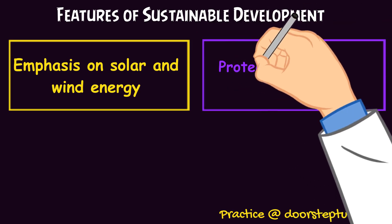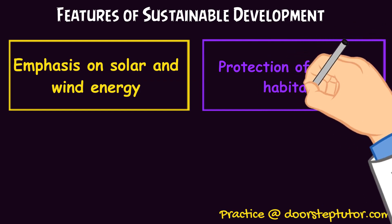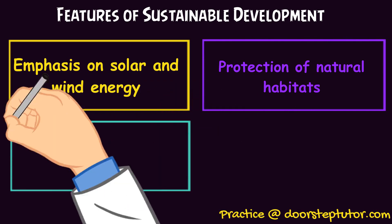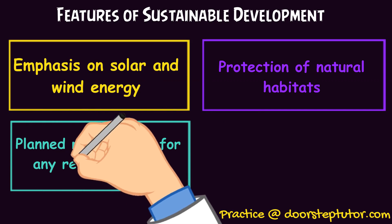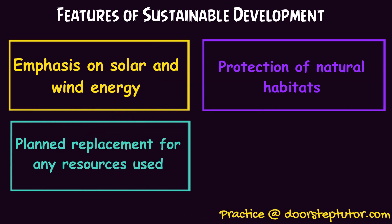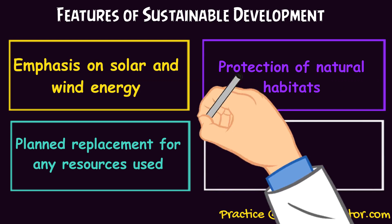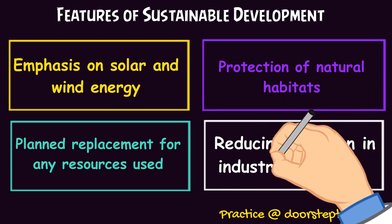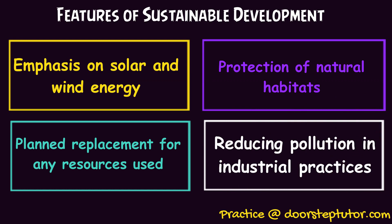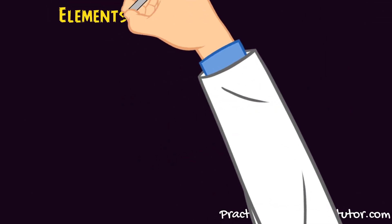Secondly, protection of natural habitats is also a focus of sustainable development. Thirdly, any amount of resources that are used should be replaced properly — that means if, for the purpose of acquiring wood, forests are cut down, then the same forest should be regrown again. Finally, pollution should be reduced in industrial practices. Most industries, especially those based on non-renewable energy sources, give out a lot of pollutants and irritants which are not only responsible for causing global warming but also impact the health of human beings.